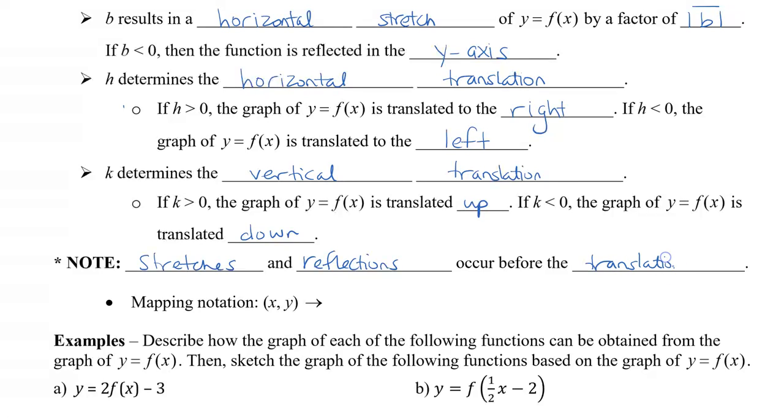So if I combine all of those letters into a mapping notation, we would have x divided by b plus h, and then a times y plus k.